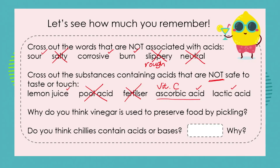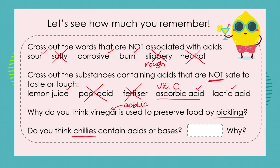Why is vinegar used to preserve food by pickling? Vinegar is acidic and bacteria do not like acids. Preserving food in vinegar allows the acids to kill any microorganisms such as bacteria. Last question: do you think chillies contain acids or bases? I think they contain acids because they burn my mouth — chillies contain capsaicin, which is a strong acid.